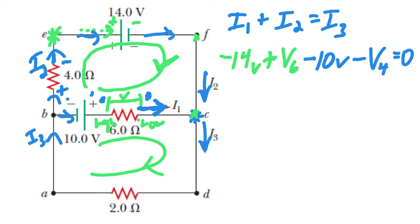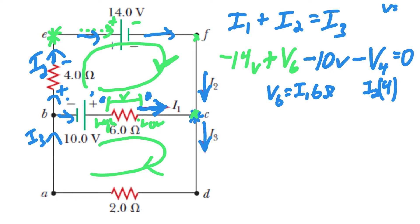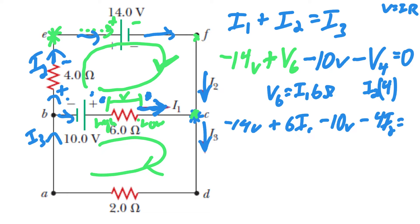We're going to use Ohm's law here. V6 we write as I1 times 6 ohms, and V4 we write as I2 times 4, using V equals IR. So rewriting this equation: negative 14 volts plus 6I1 minus 10 volts minus 4I2 equals zero.